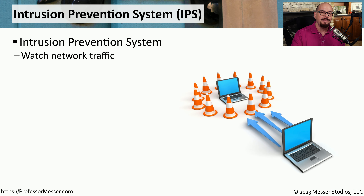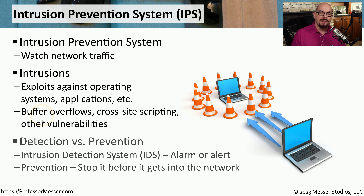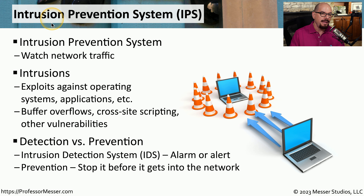An intrusion prevention system, or IPS, is designed to watch traffic traverse the network in real time. If there's anything inside the traffic that could be interpreted as dangerous or an exploit, it can be blocked immediately by the IPS. This might be a known vulnerability, such as an exploit against an operating system or a known vulnerability in an application, or it might be something more generic, like a buffer overflow or a SQL injection. You might also see a reference to an intrusion detection system, or IDS, which is able to alert you that these vulnerabilities are traversing your network, but an IDS can't block any of that traffic. That's why we have intrusion prevention systems, so that you can prevent that information from getting into your network if it's identified.